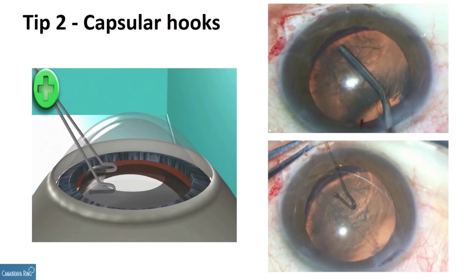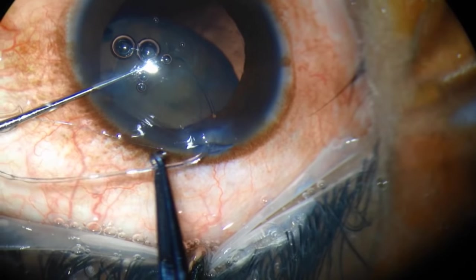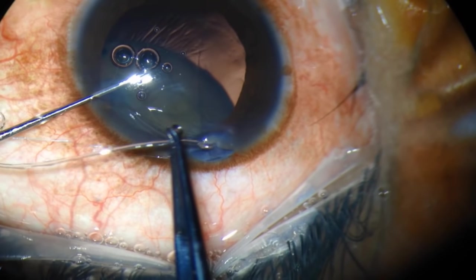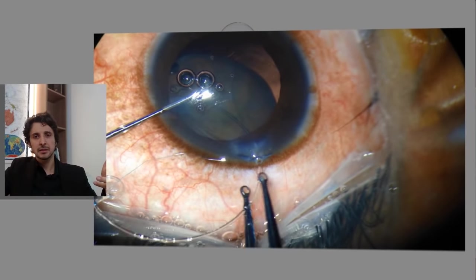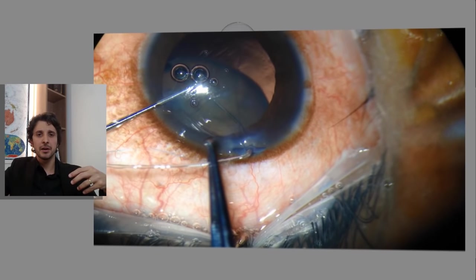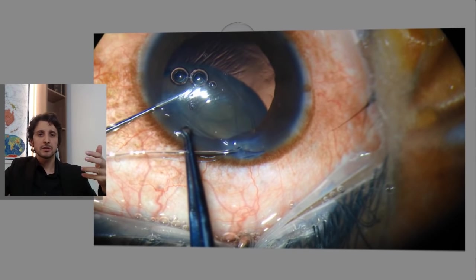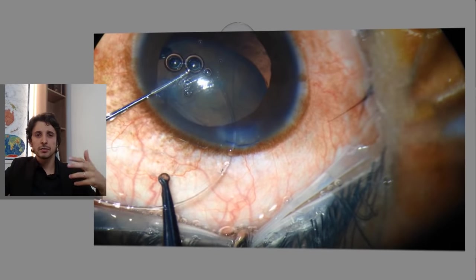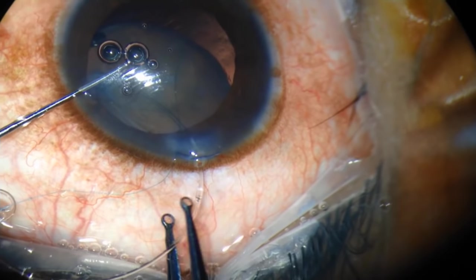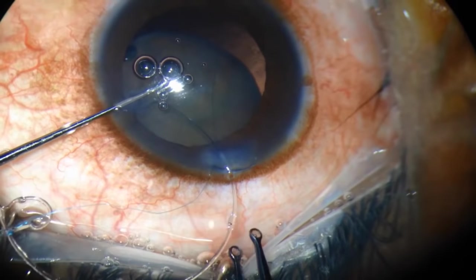Tip two: Capsular Hooks — for example, a macro hook. You need to use OVD between the capsule and the lens to implant the Capsular Hook. You can see in this video how it is not possible to insert the CTR because the bag is not supporting — there is no support in the bag, so it's impossible to insert the CTR.